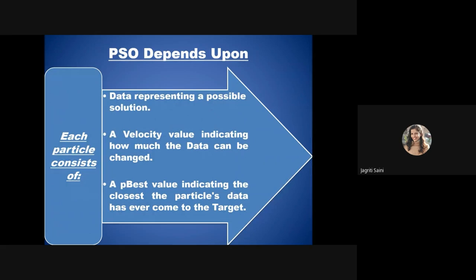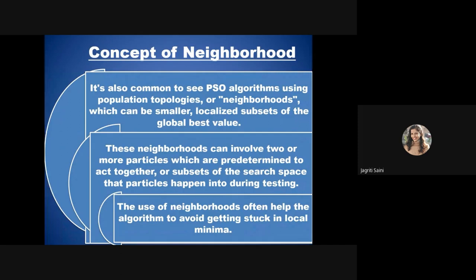Each particle contains data representing a possible solution and can share that information with other particles. It also has a velocity value indicating how much data can change in the problem space. The pBest value indicates the closest the particle's data has come to the target — the present best value — which must be improved after every iteration to achieve the final fitness value.